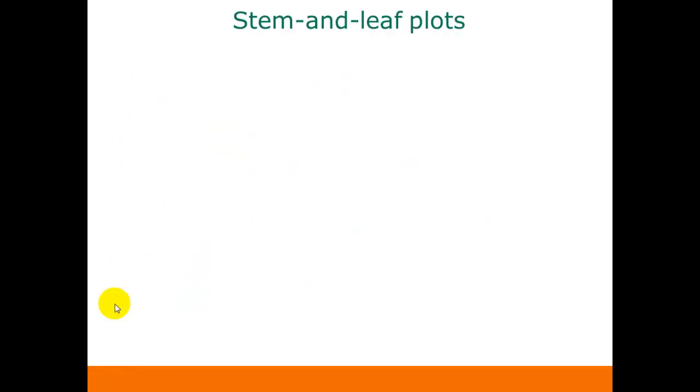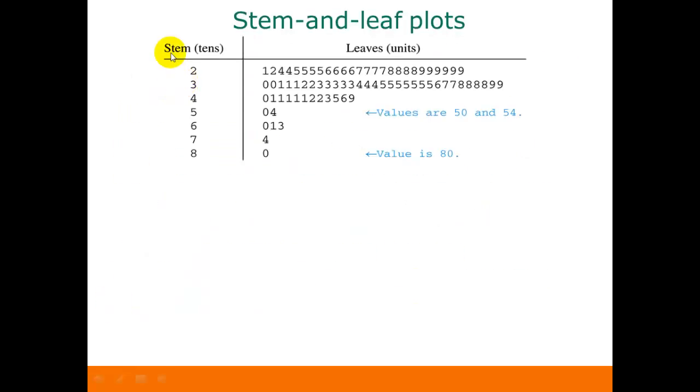So here's an example of a stem-and-leaf plot. Here are the stems, and in this case it tells you that the stem represents tens and the leaves represent units. So the values here, if our stem is 5, that means 50 and our leaf is 0, so that data value would be 50 and this data value would be 54. The data value represented by this leaf would be 80 because the stem was 8.